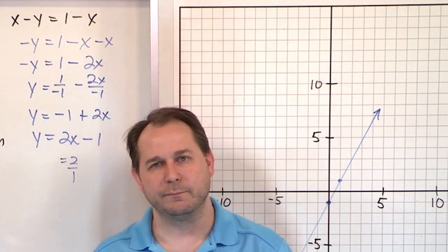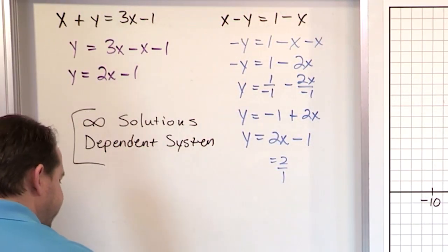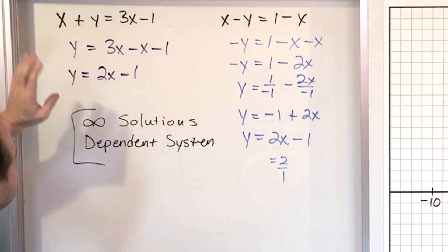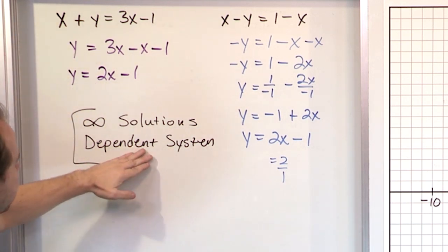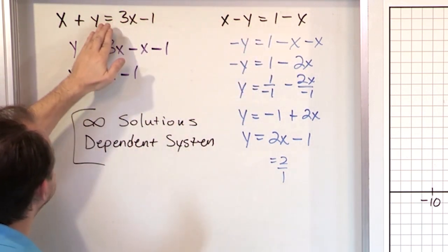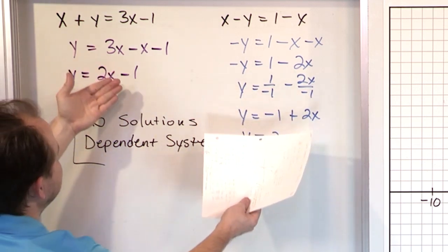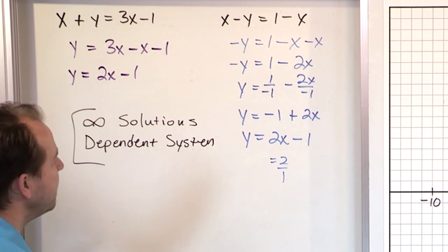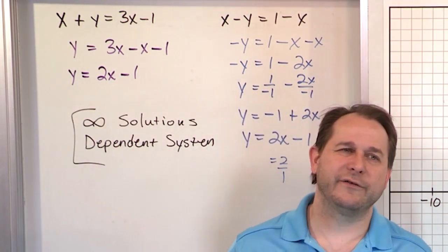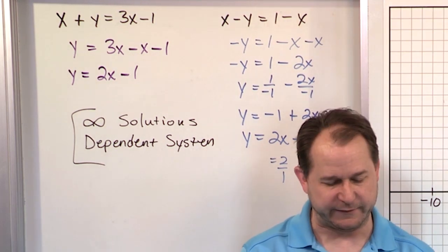Every point on line A is also on line B. So we call it dependent. The reason we call it dependent is because this equation can be written in terms of the other equation, usually by multiplying and by rearranging terms. And you can see that happened when we tried to rearrange terms and it became the same thing. So they're not independent equations - one of them is dependent on the other. It turns out that one of them is basically equal to the other one. That's why we call it a dependent system.